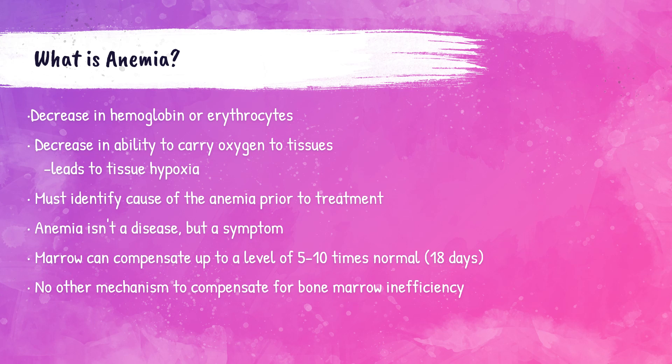Throughout my lecture series we will be discussing all the different types of anemia. Of course this is just an overview of anemia in general. When a patient does not have enough healthy red blood cells or hemoglobin, the bone marrow is able to compensate by producing more red blood cells. It can accommodate by churning out more red cells for around 18 days or so. Unfortunately, there are no other mechanisms to compensate for red cell or hemoglobin loss, so after the bone marrow can no longer compensate, this is when symptoms of anemia start appearing.